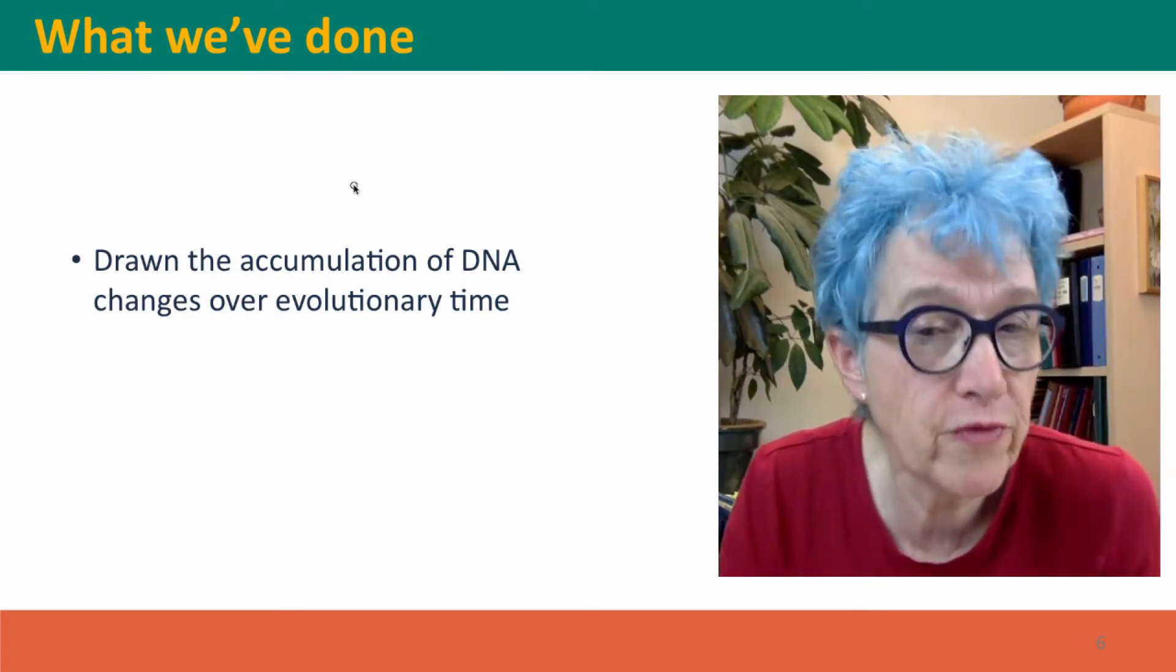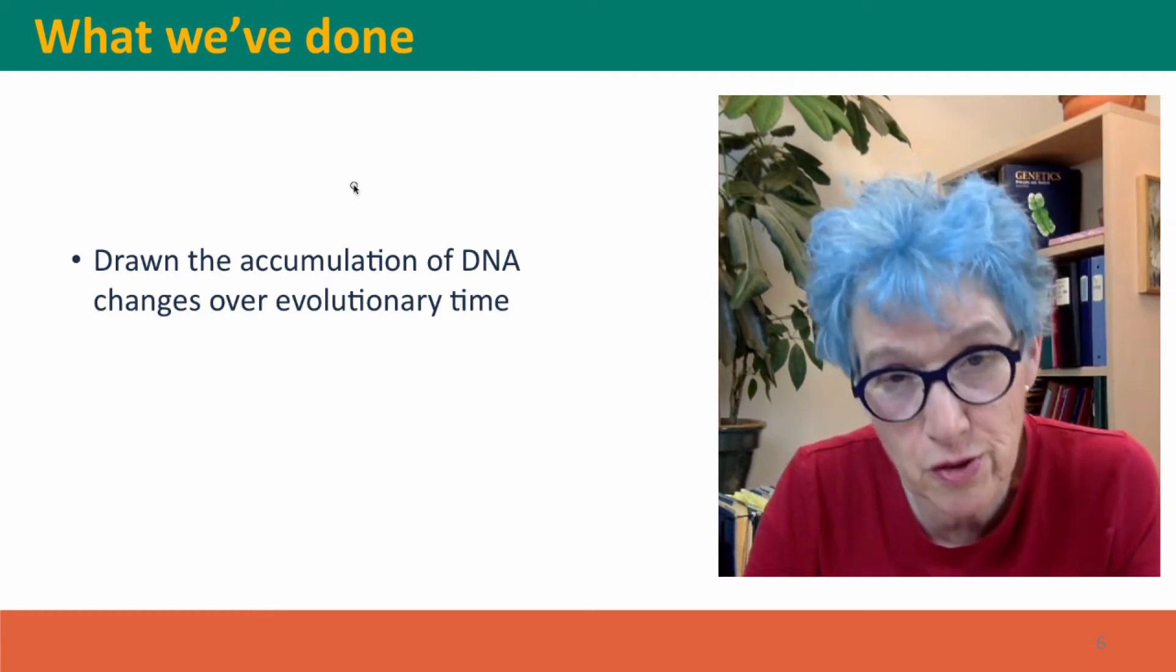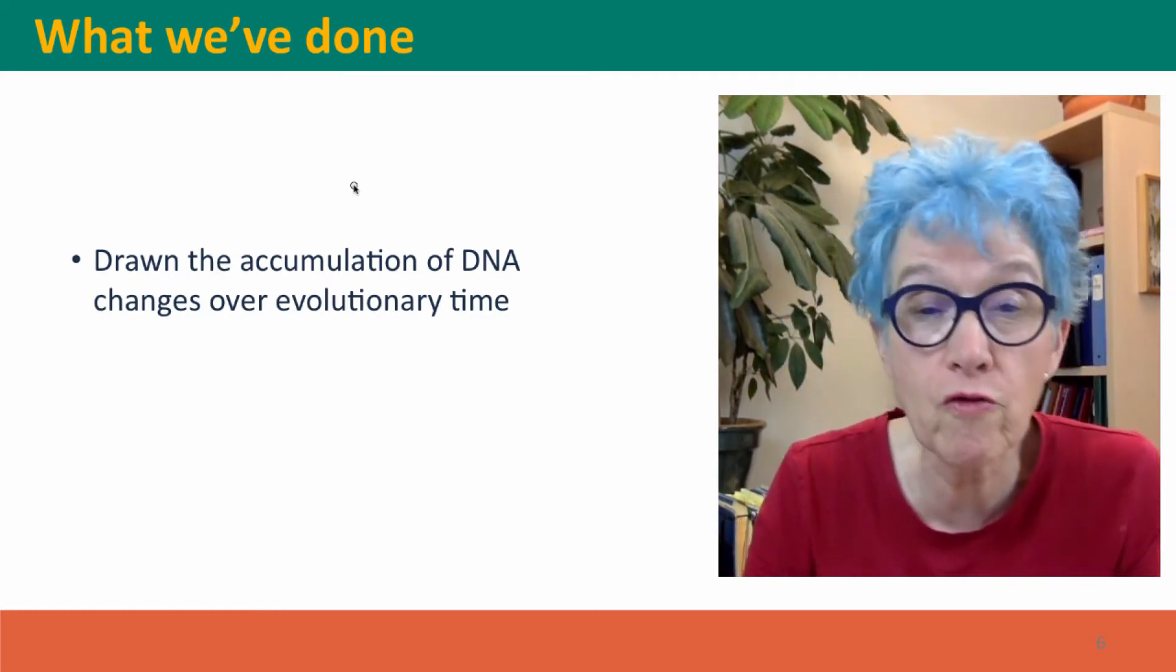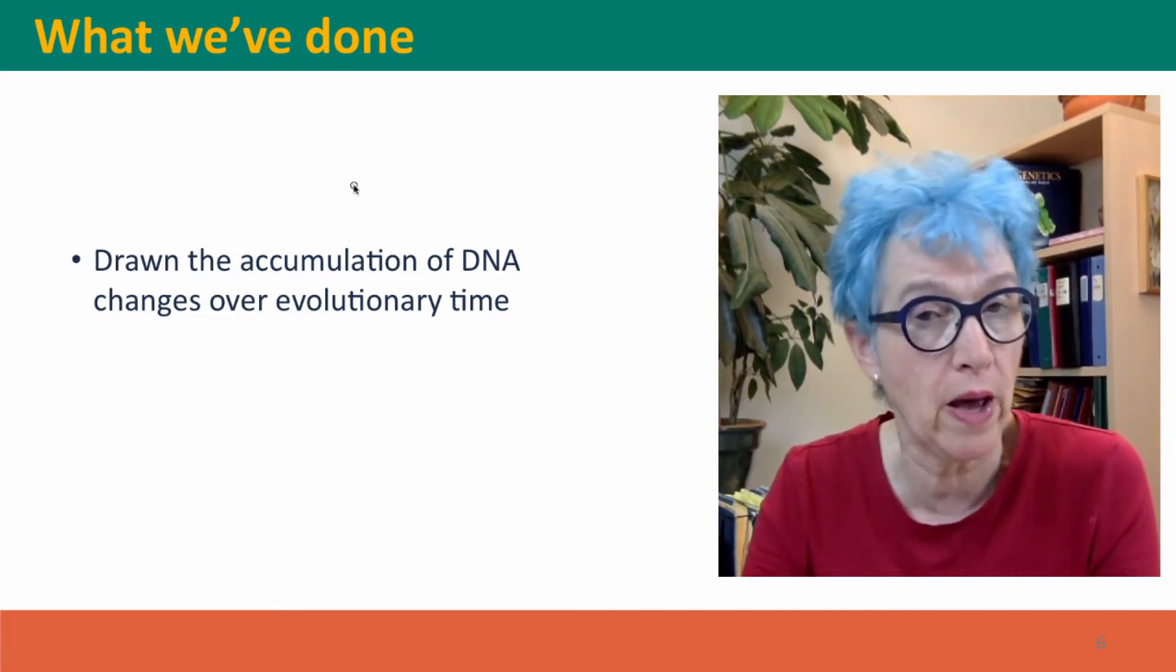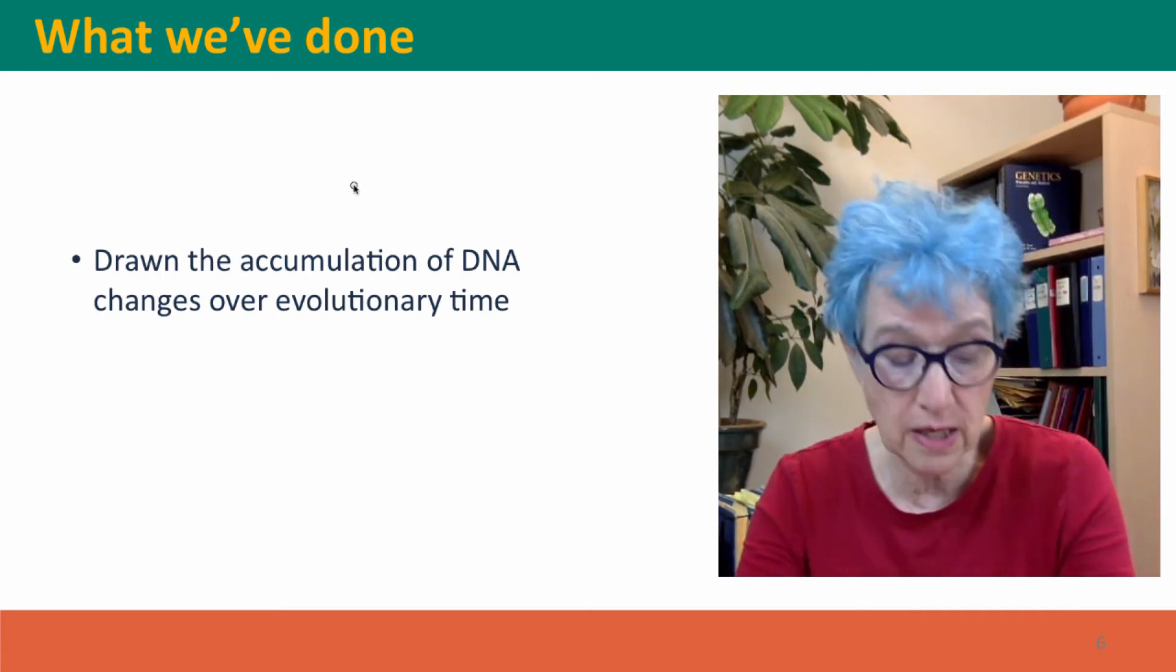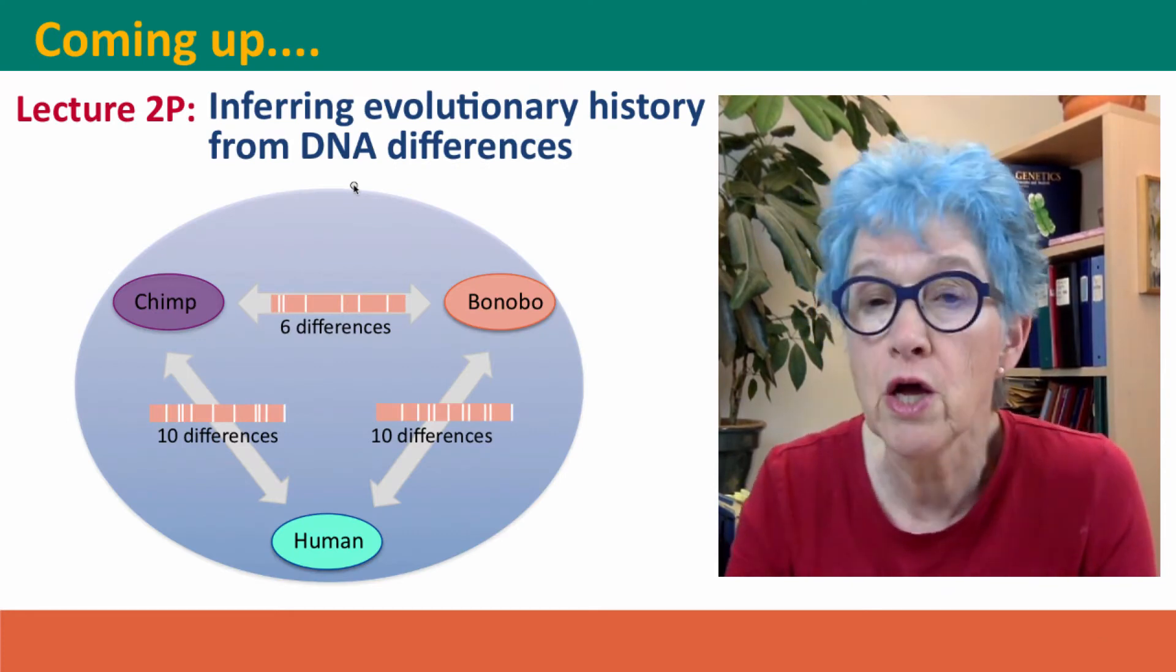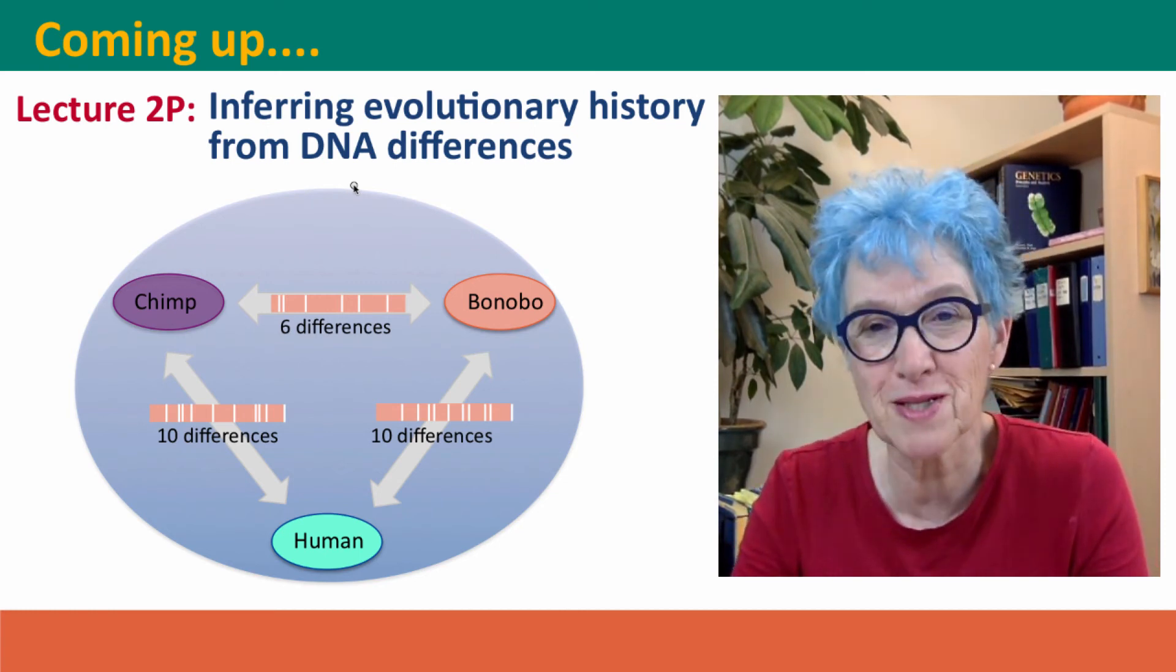So what we've done, we talked about a little bit about how to look at trees, why we look at trees, and we've drawn the accumulation of DNA changes over evolutionary time in a hypothetical scenario, but something that we know happened. We don't know exactly what the mutations were, but we know this divergence happened. Now, in the next lecture, we're going to talk about how we can use these accumulated sequence differences to work back to infer evolutionary history. I hope to see you there.